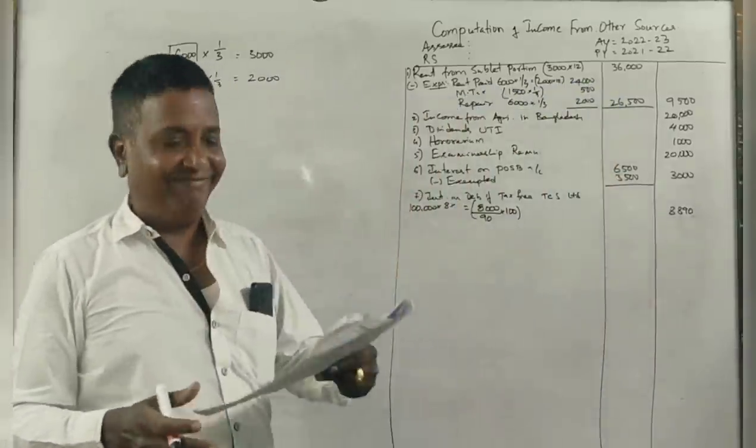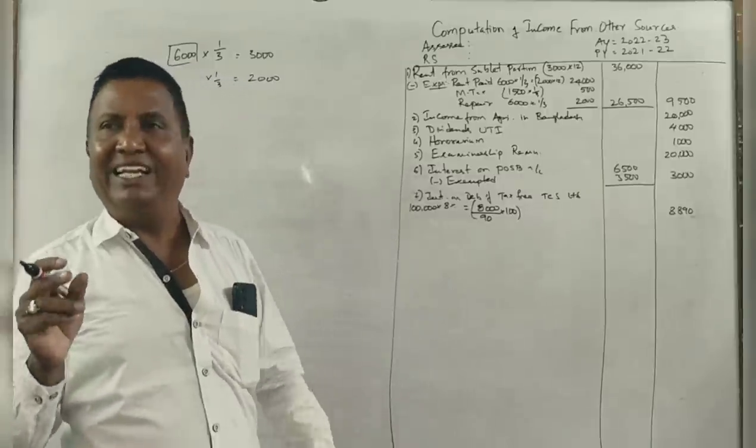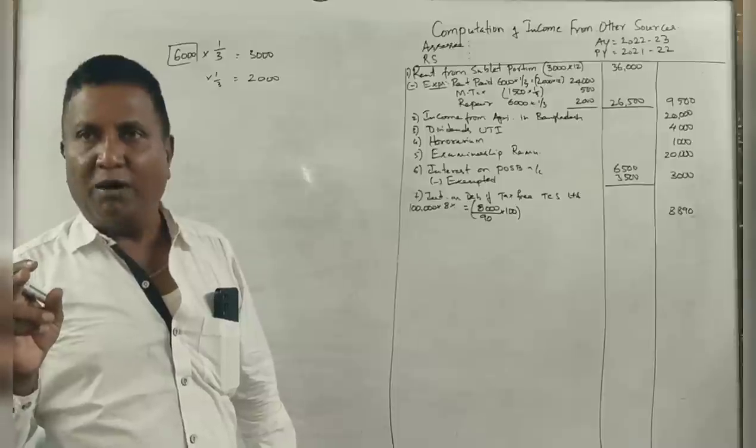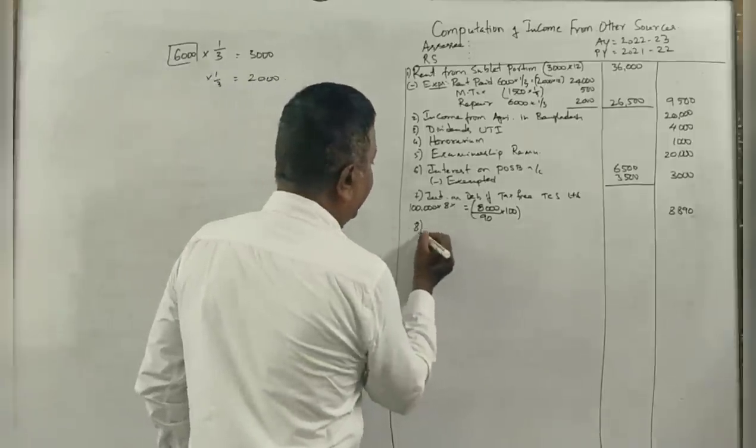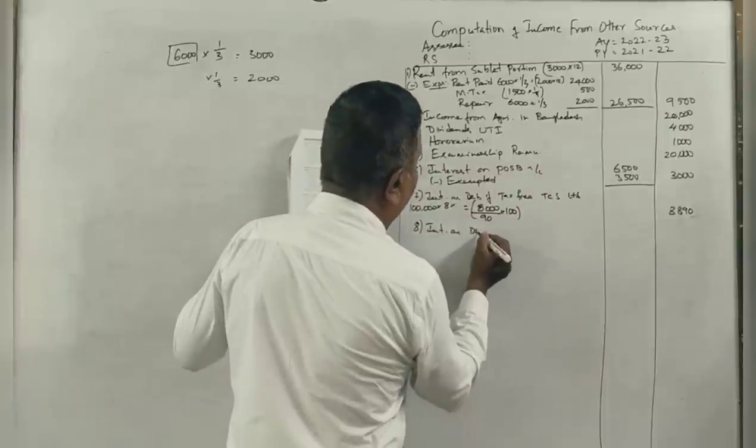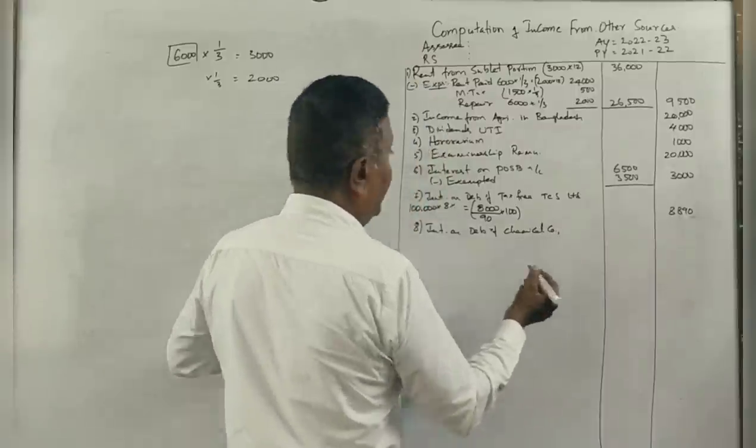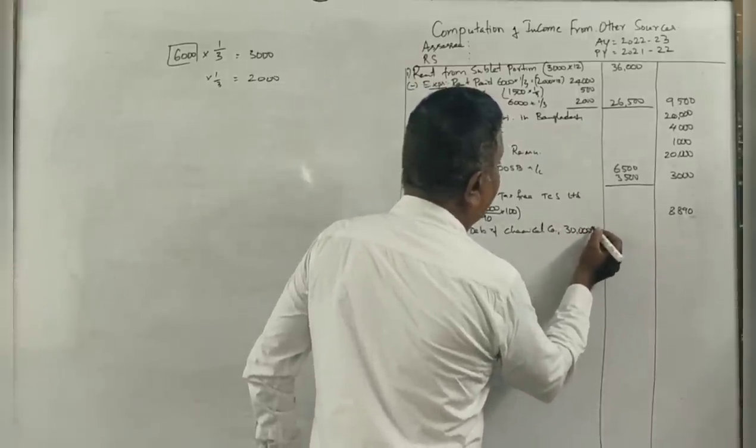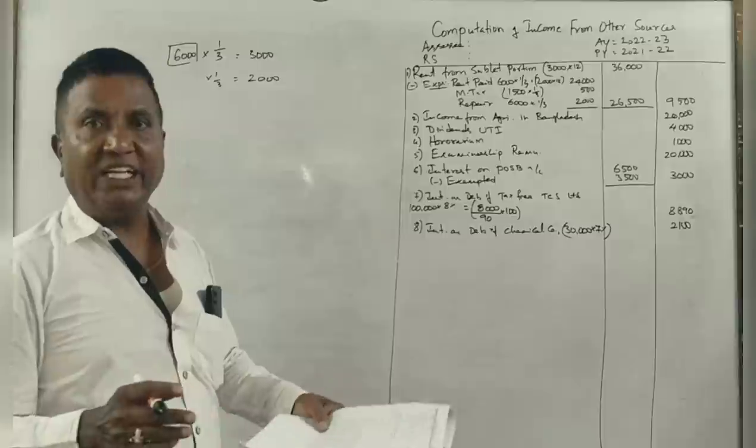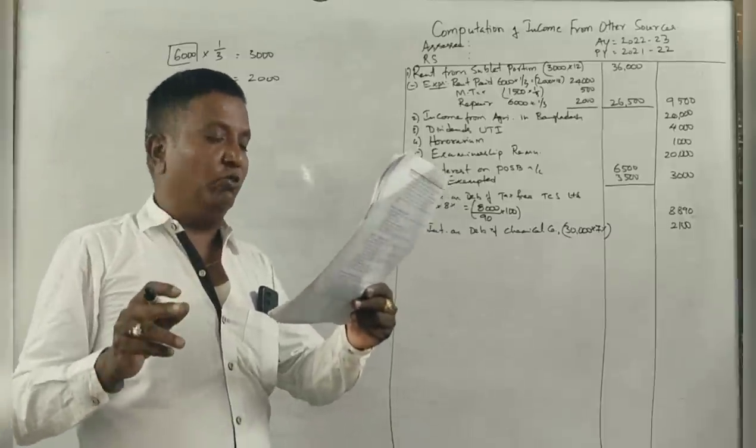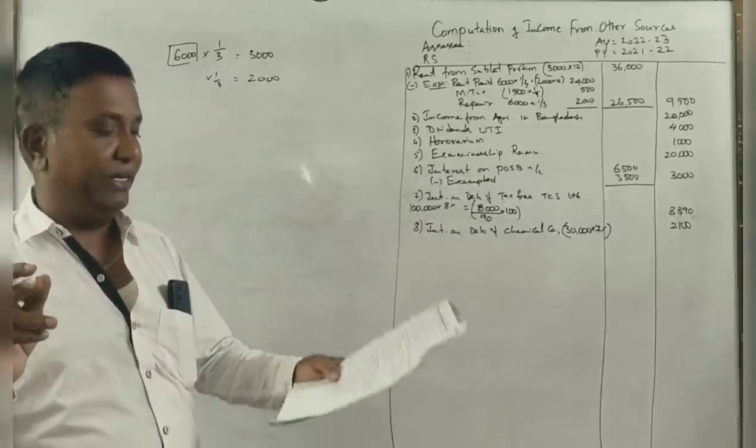Next point: 30,000 rupees, 7% debentures of chemical company. Interest on debentures of chemical company is 30,000 into 7%, which equals 2,100. This is directly taxable.